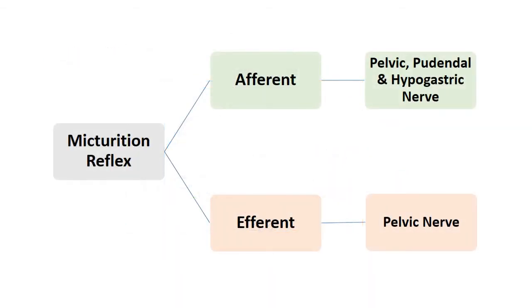This is the normal micturition reflex. As you can see, the afferent is by all three nerves — that is pelvic, pudendal, and hypogastric nerve — and the efferent is only by the pelvic nerve. So in the micturition reflex, only the efferent is the pelvic nerve.